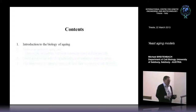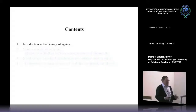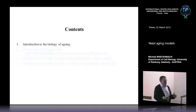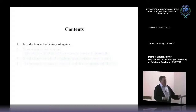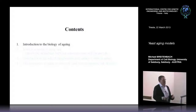Hayflick aging is a phenomenon discovered by Leonard Hayflick, who was the first to show that human cells in culture, after a certain limited number of divisions, just stop dividing and eventually die. When we started doing aging research in yeast, one of the first questions — in collaboration with somebody working on Hayflick aging — was: is there a similarity? And you will see there is a lot of similarity.